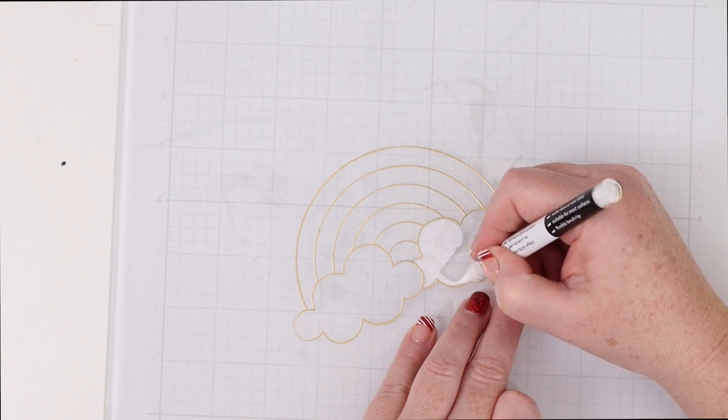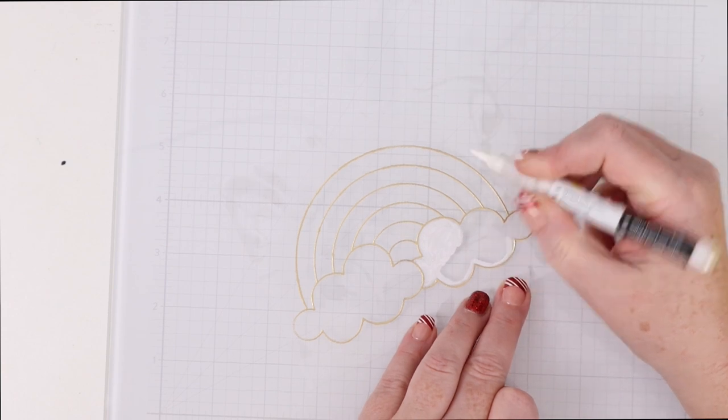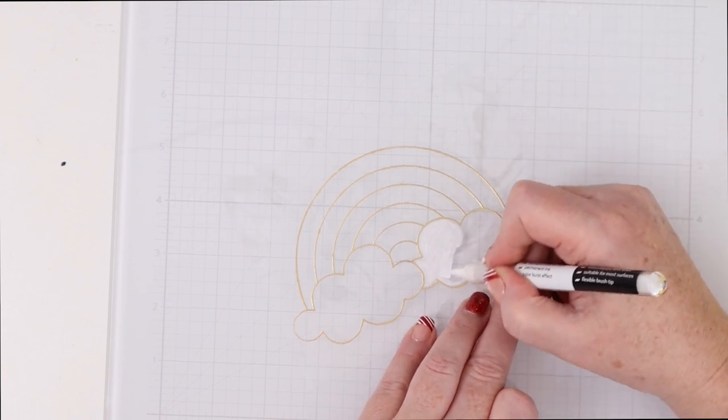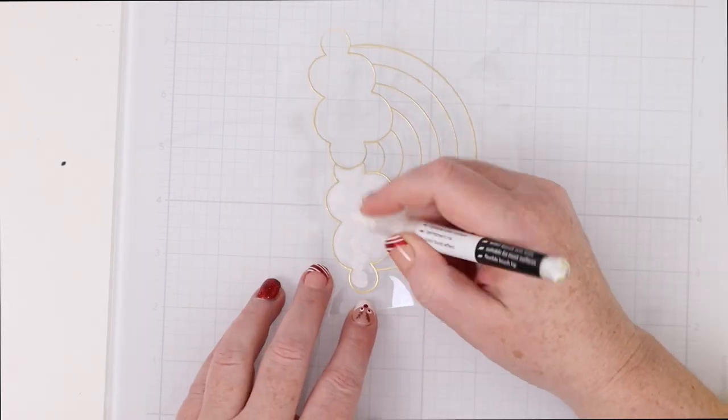And then I also like to outline close to the embossing powder without going over it and then kind of fill it in.